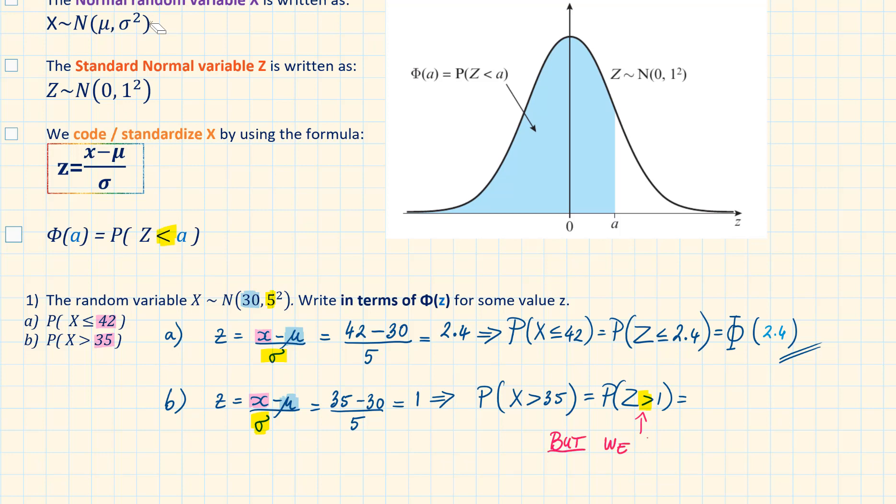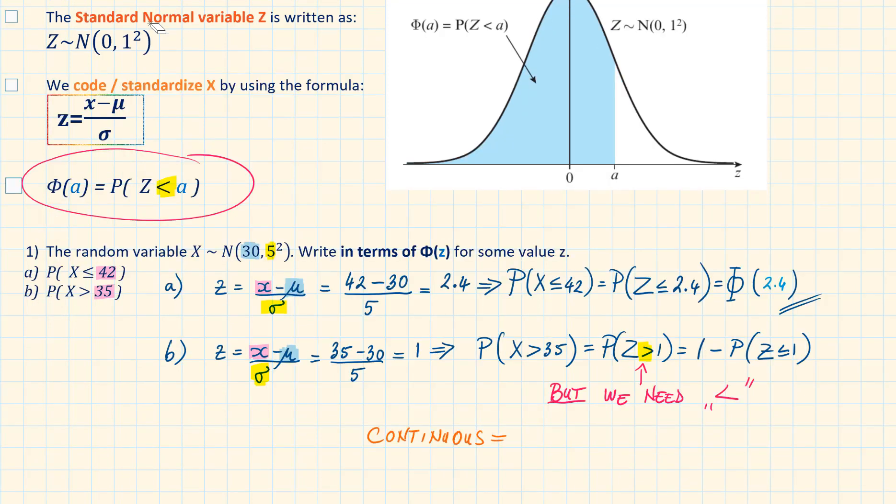But when we write it in terms of Φ we need less than, not larger than. So we need to rewrite this as 1 minus the probability of Z being less than or equal to 1. To continue we can write this as 1 - Φ(1).